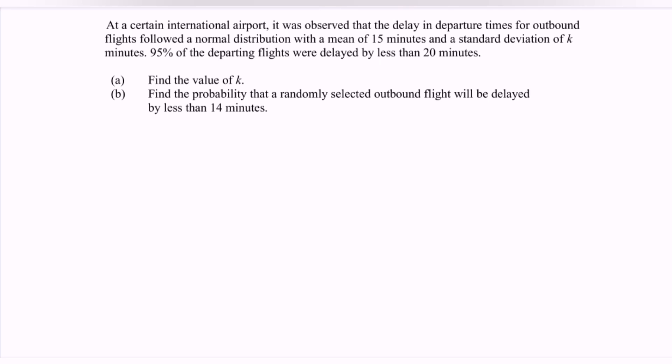So in here we have X is normally distributed, X~N(15, k²), where k is the standard deviation. 95%, that is the probability 0.95, of the departing flights will delay by less than 20 minutes. So we have the given information: probability that X is less than 20, which equals 0.95.